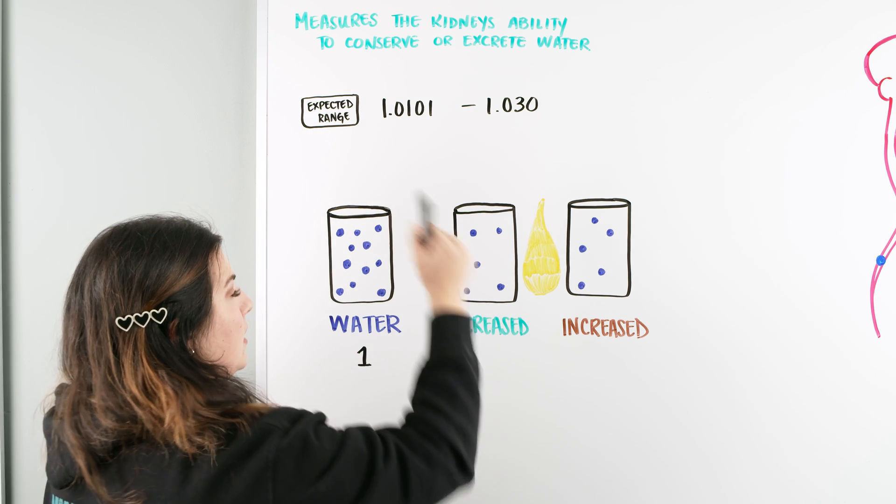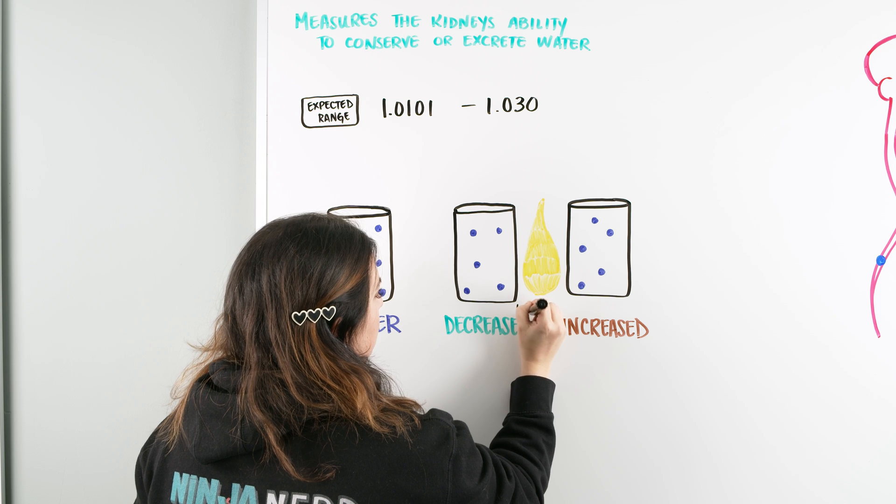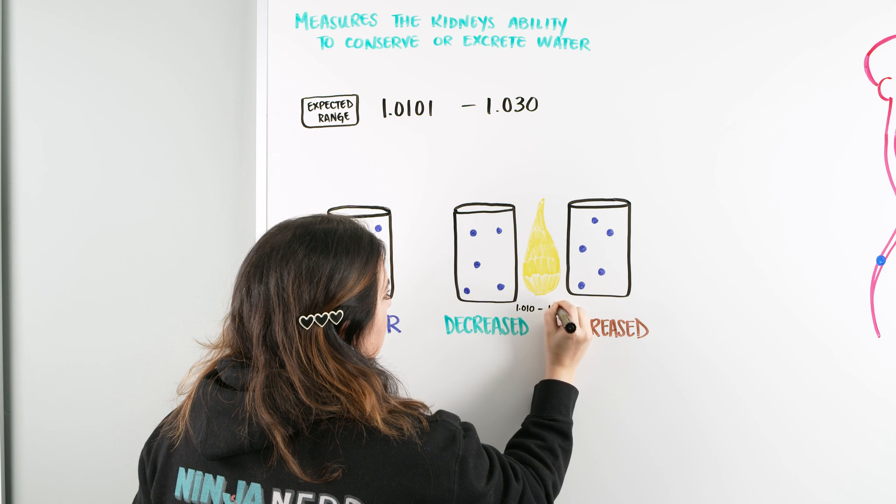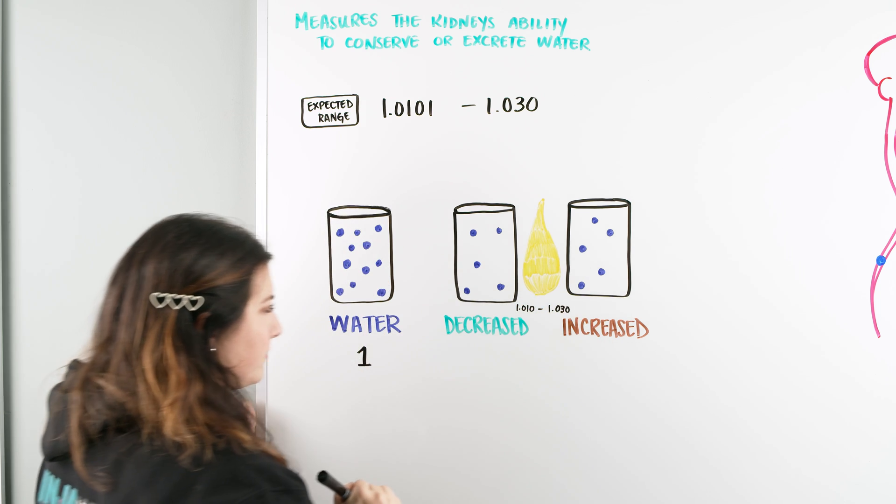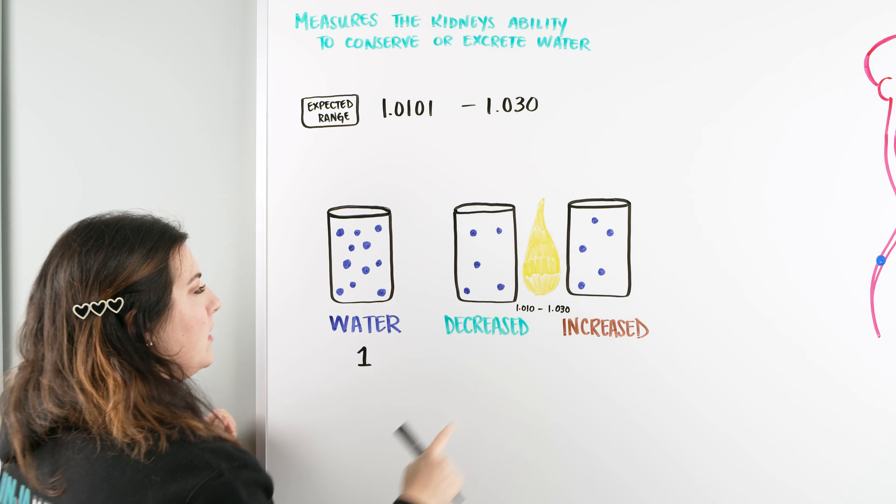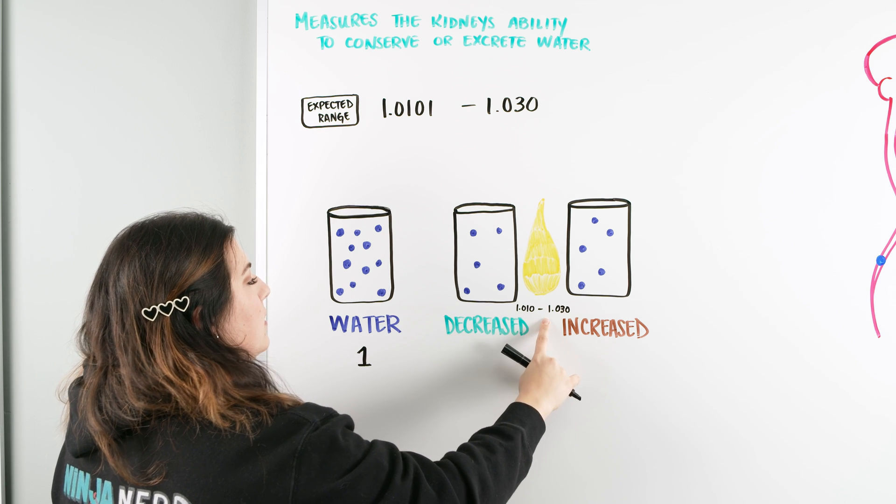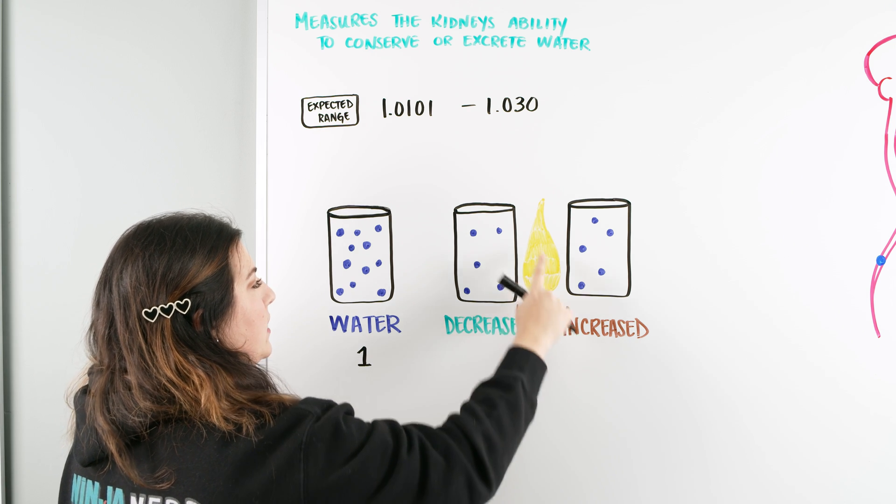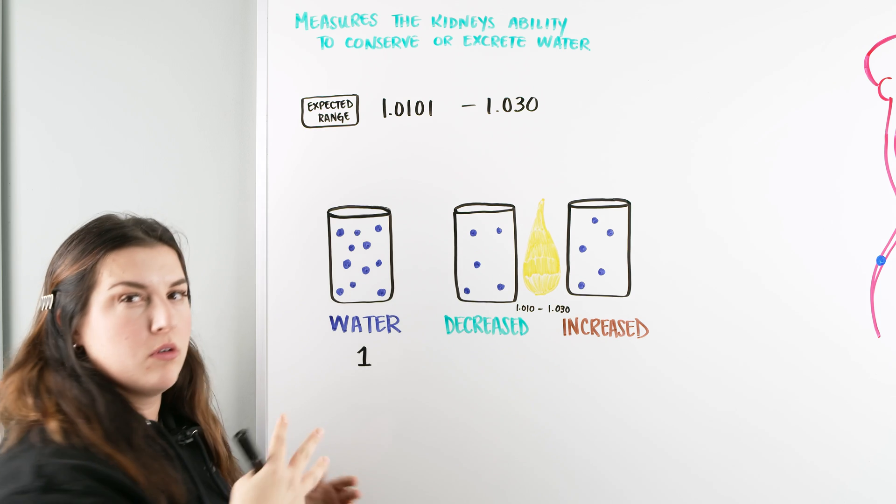And then we just set up here, urine is anywhere from 1.010 to 1.030, okay? So if we're looking at this, we see a patient who is going to have anywhere in this range of urine that's considered normal, great.